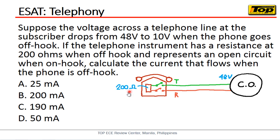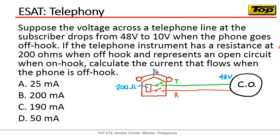Looking at the figure, your telephone has 200 ohms resistance and it is connected to the central office. Right now it is on-hook, so your tip and ring are in an open circuit — no current flows through the telephone circuit, and the central office provides 48 volts.